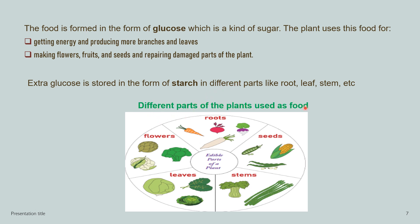Different parts of plants are used as food by us. Roots: carrots, beetroot. Flowers: artichoke, broccoli, cauliflower. Leaves: spinach, cabbage, and other leafy vegetables. Stems: celery, asparagus. Seeds: corn, peas, beans. We use so many different parts of the plant — it is so important for us.